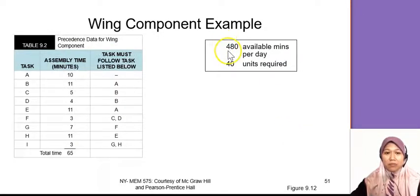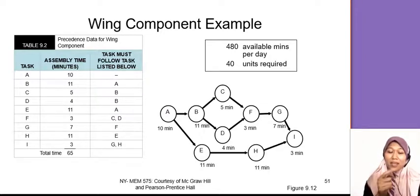They give us information: there are 480 available minutes per day. So in one day, they work 480 minutes, and 40 units required. So wing component that they need to produce in one day is 40 units. What is the time for one unit of wing component? That's what we need to find. That's the cycle time.